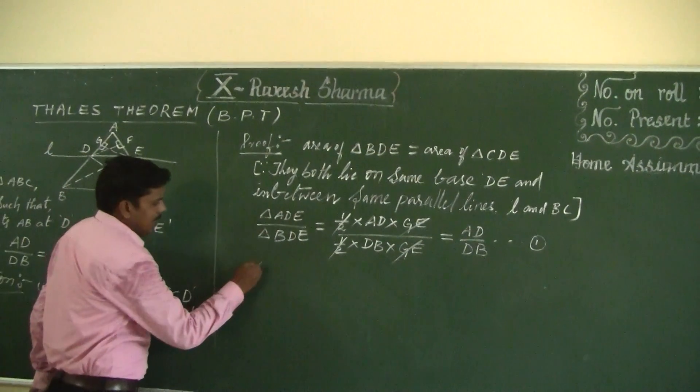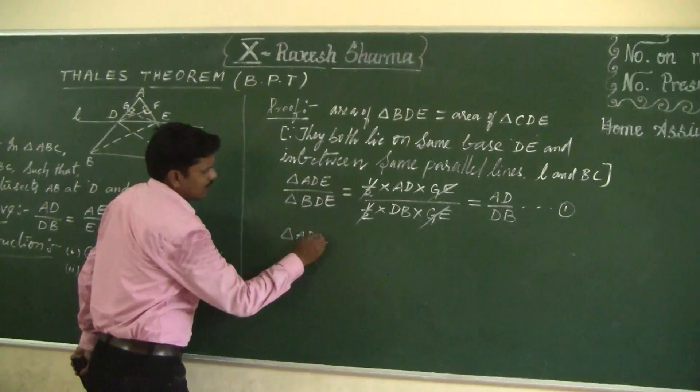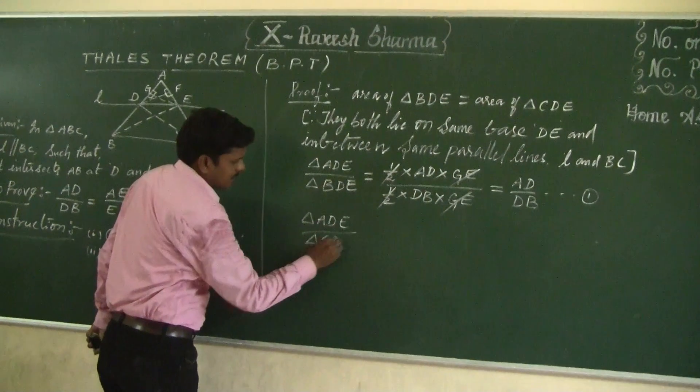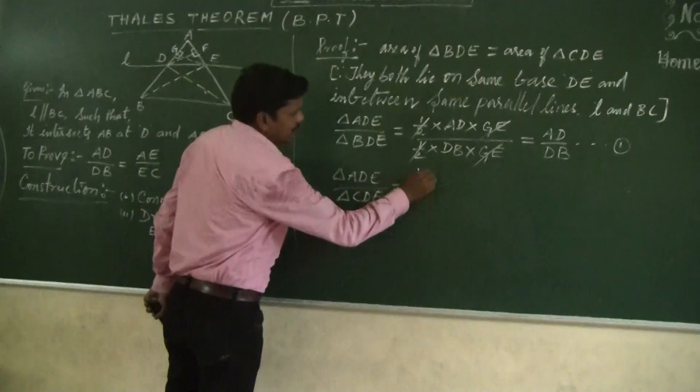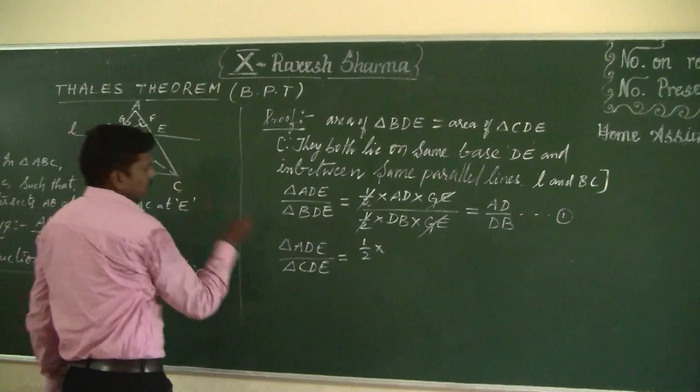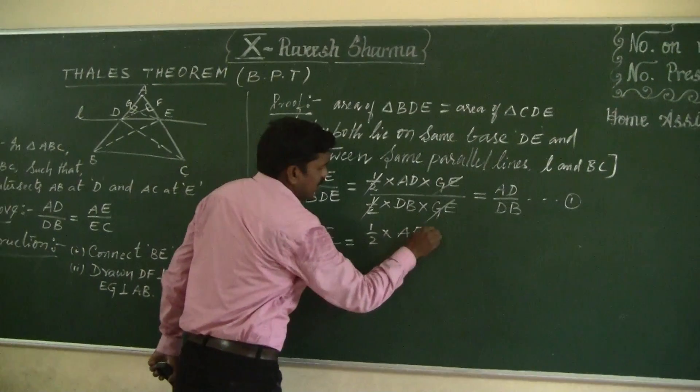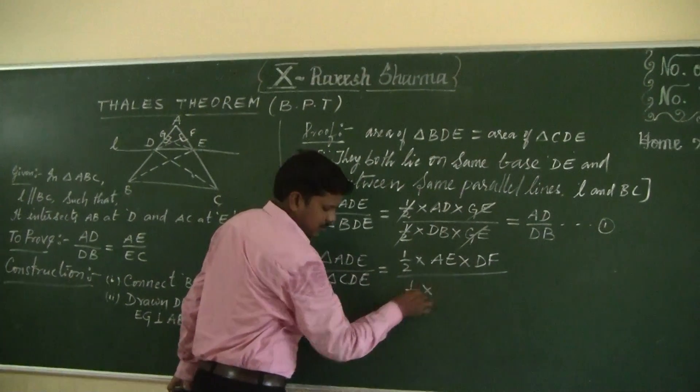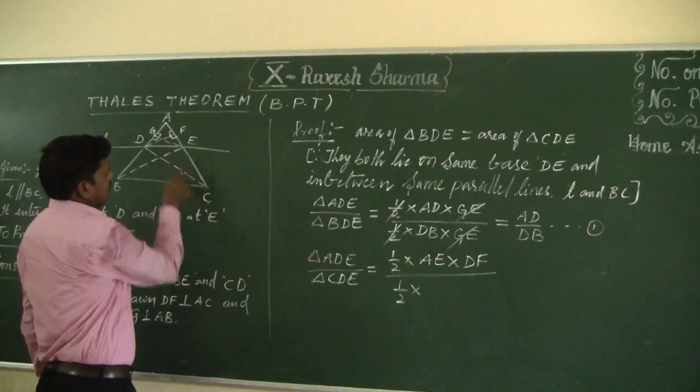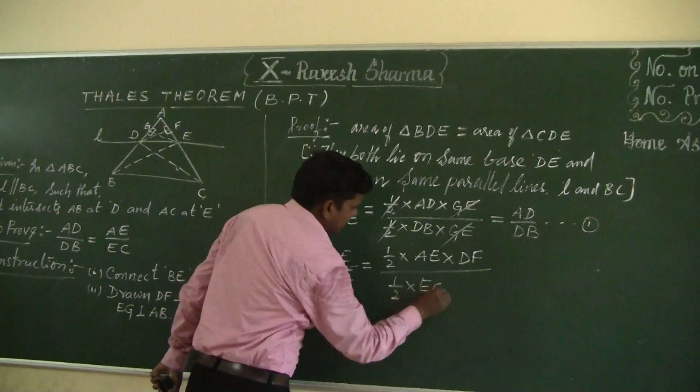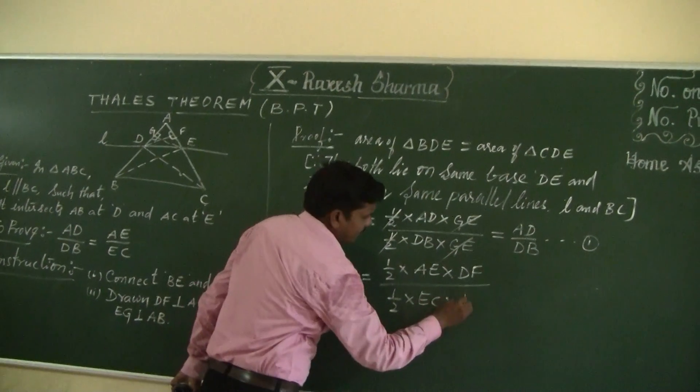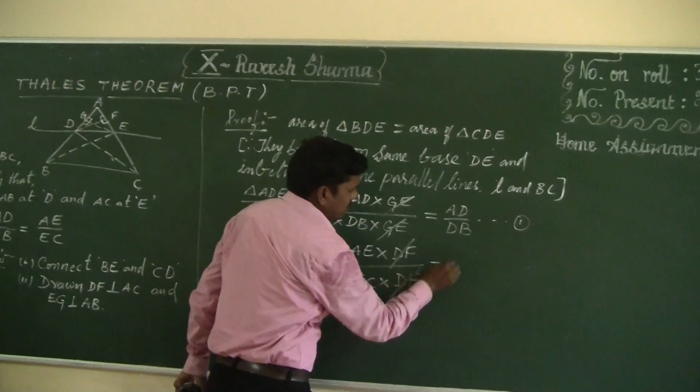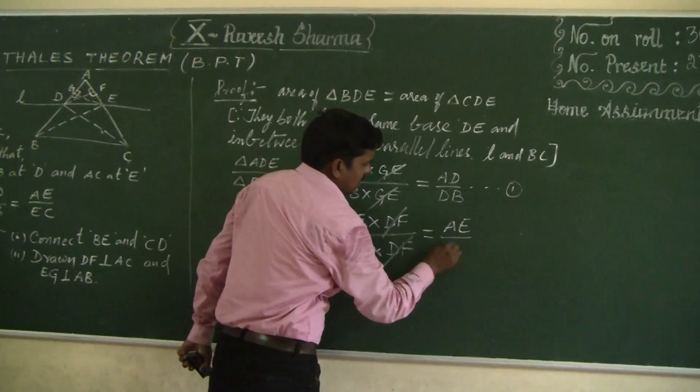Now compare the same triangle area ADE with respect to triangle CDE. Half into base AE into height, by half into base EC into height. Height will cancel, half will cancel. Finally what we got? AE by EC. This is equation 2.